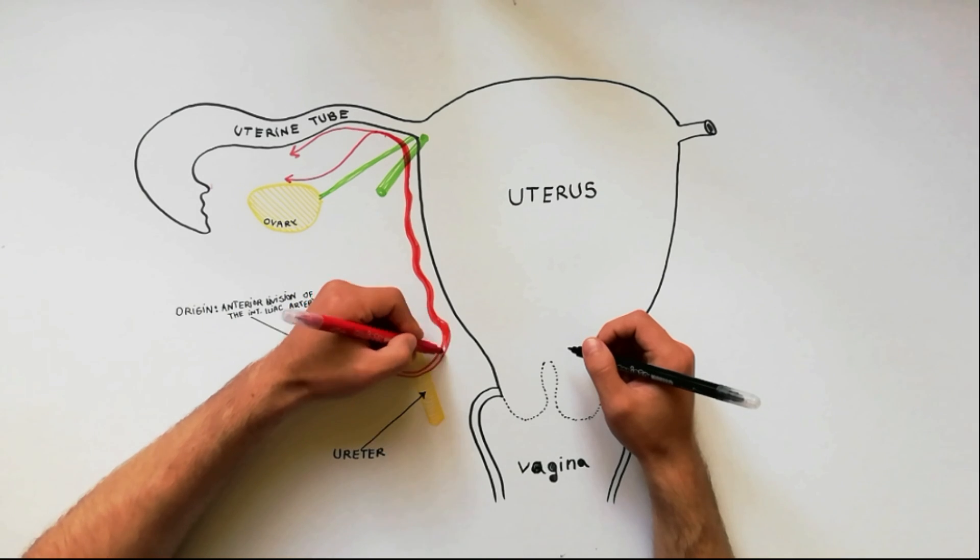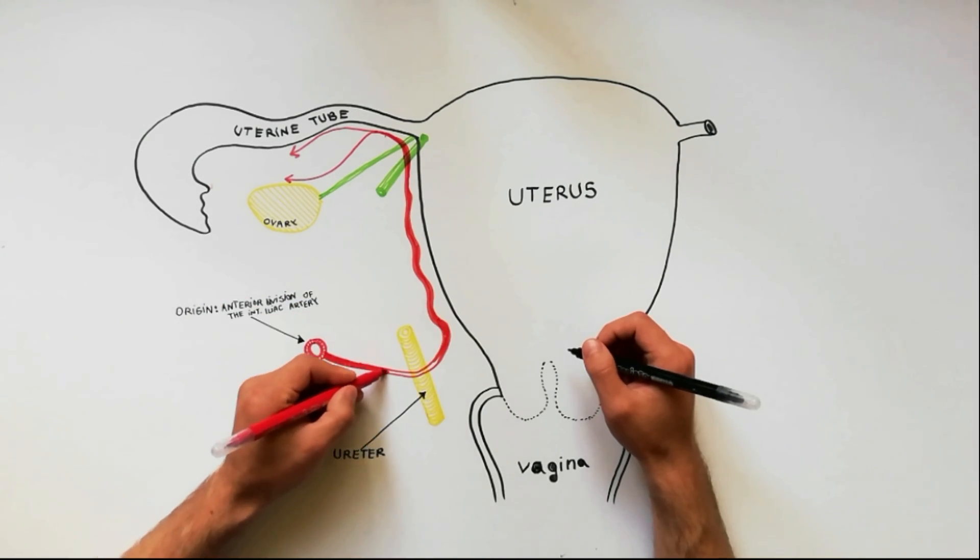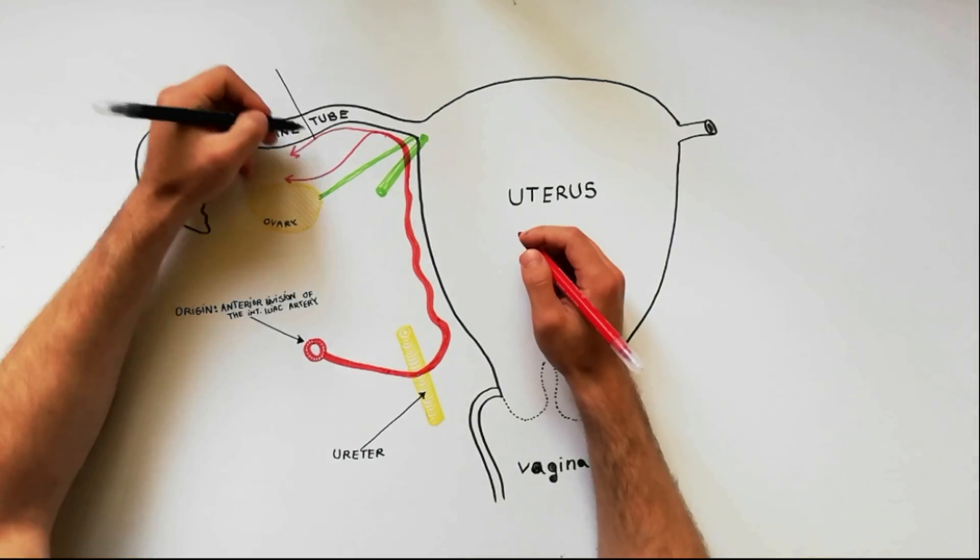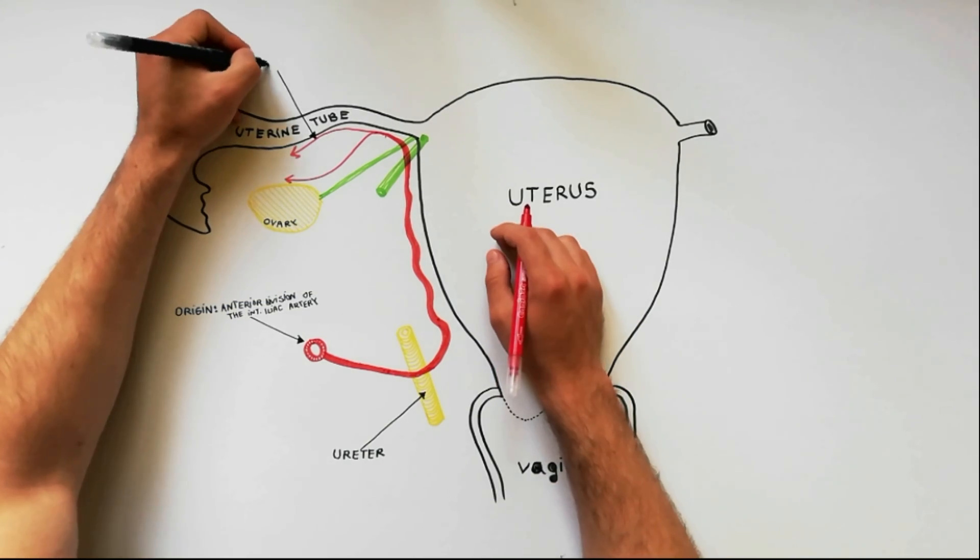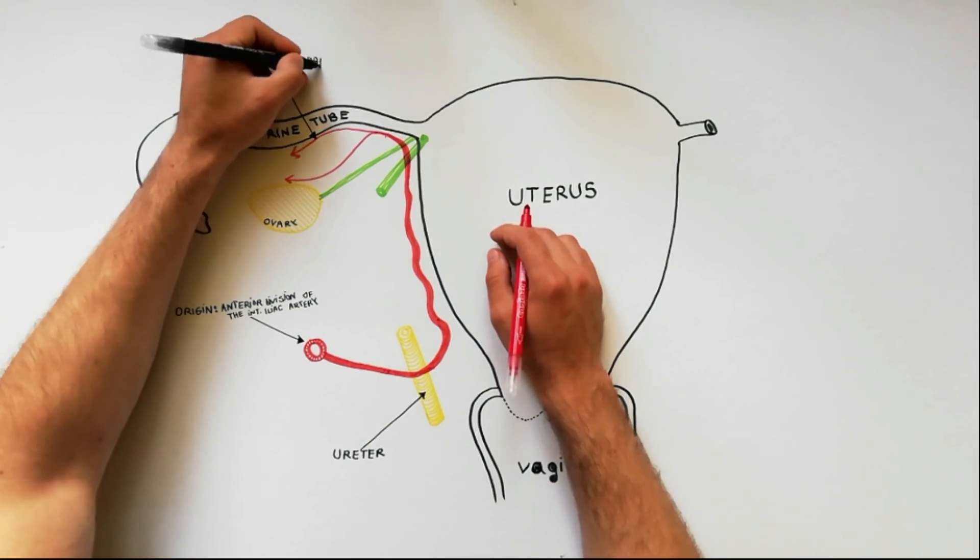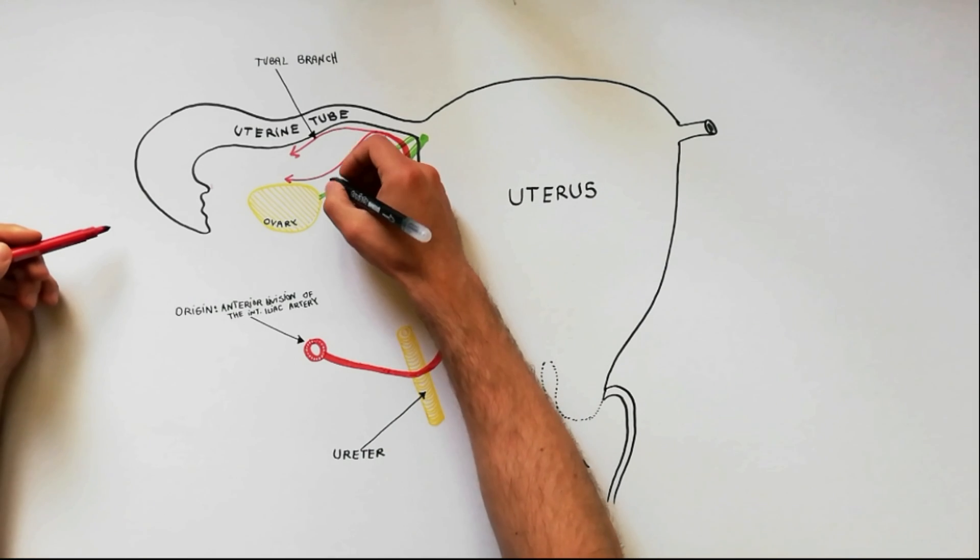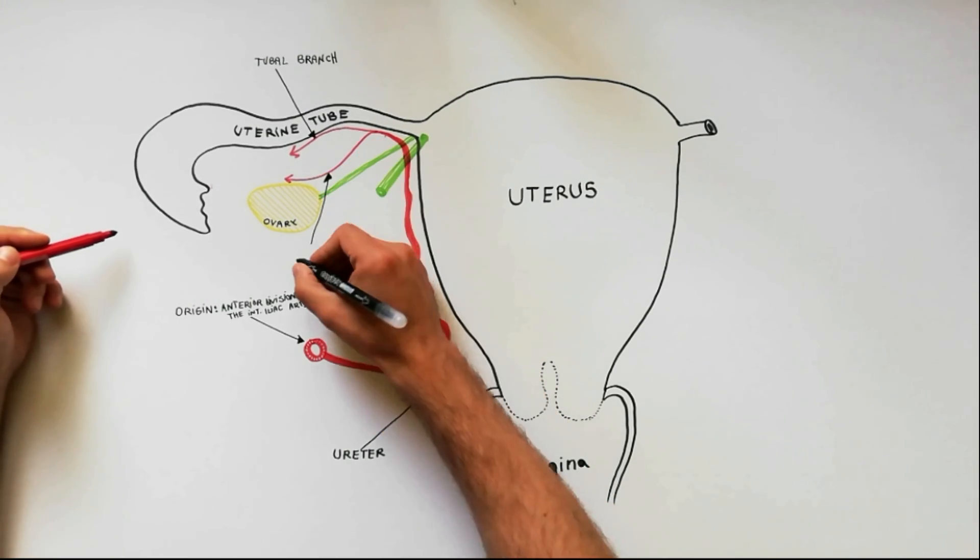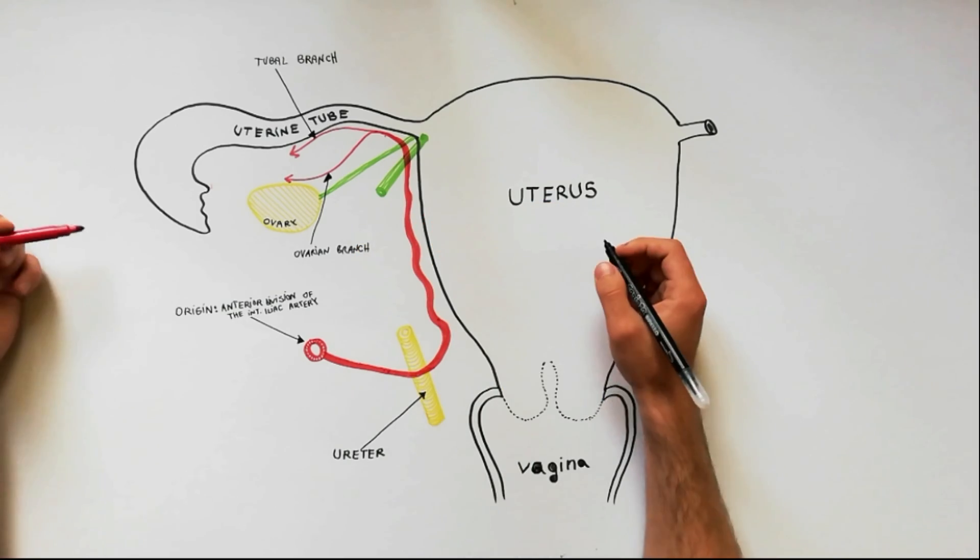Then it ascends along the side of the uterus. At the superolateral angle of uterus it turns laterally, runs along the uterine tube, and terminates by dividing into two branches, the tubal branch and the ovarian branch.